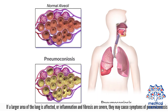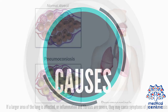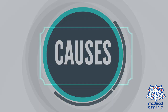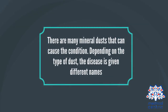If a larger area of the lung is affected, or inflammation and fibrosis are severe, they may cause symptoms of pneumoconiosis. There are many mineral dusts that can cause the condition. Depending on the type of dust, the disease is given different names.